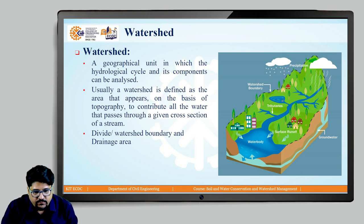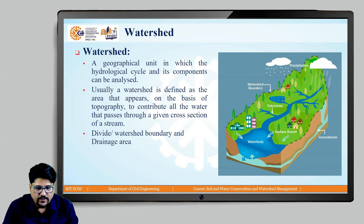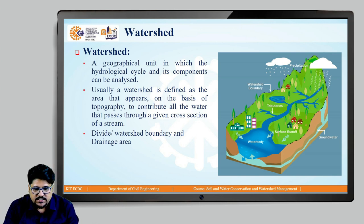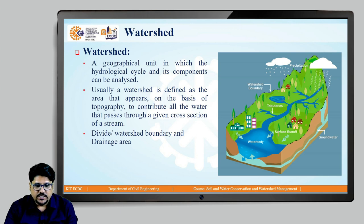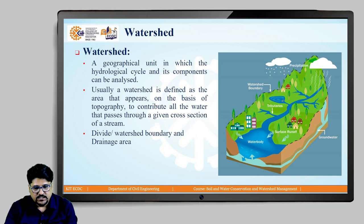A watershed is an area that forms runoff resulting from precipitation, as shown in the figure — the precipitation that forms streams as well as lakes. The water falling on the watershed as precipitation, whether rainfall or snowfall, drains from the surrounding regions to a common point such as lakes or streams.